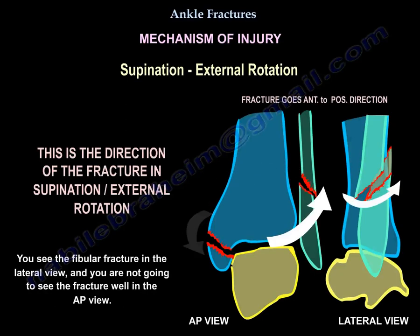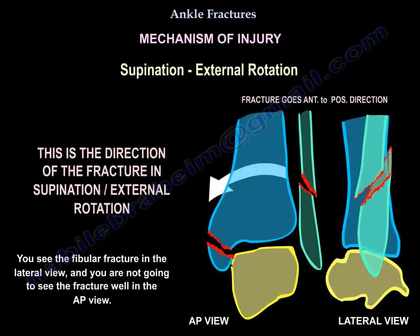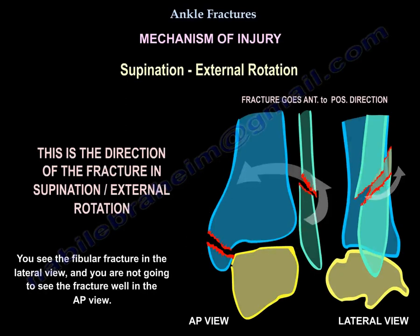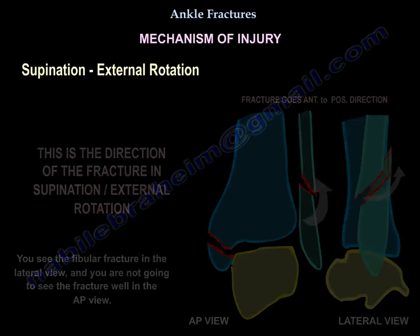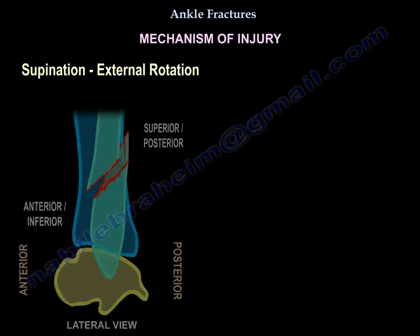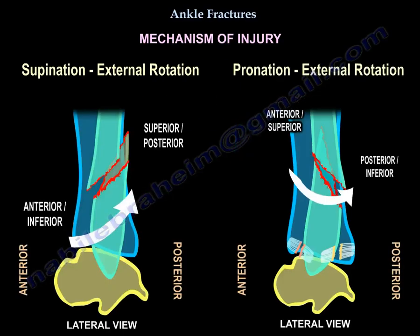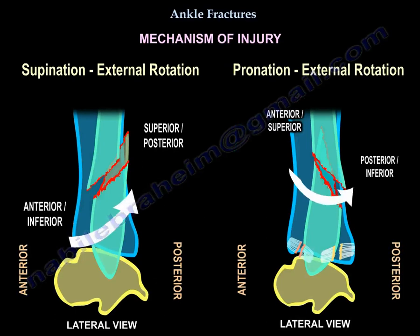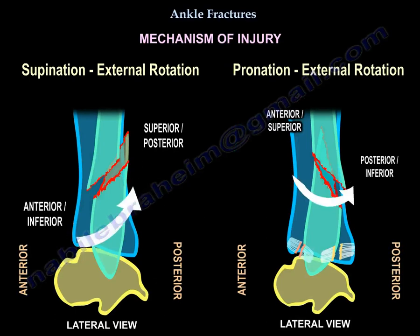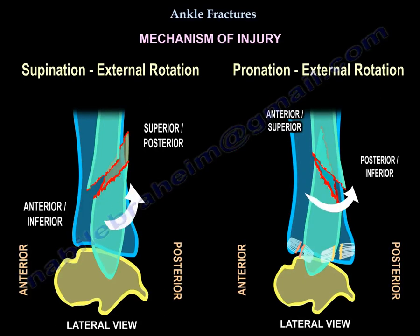You see the fibular fracture on the lateral view — you are not going to be able to tell from the AP view. But if it is pronation external rotation, this is the direction of the fracture. Here is a comparison between supination external rotation and pronation external rotation.